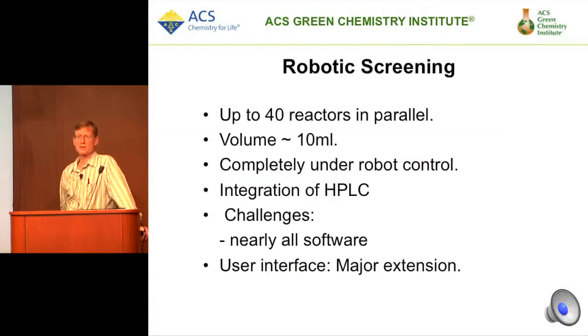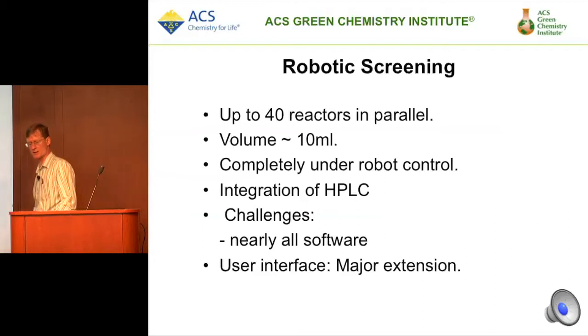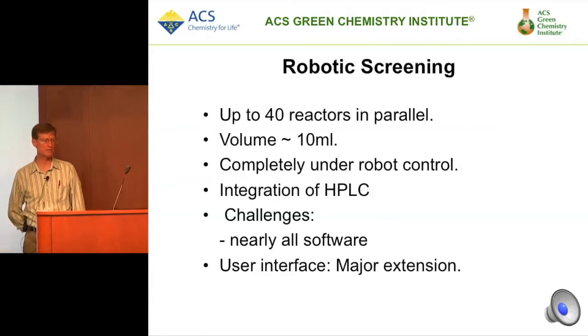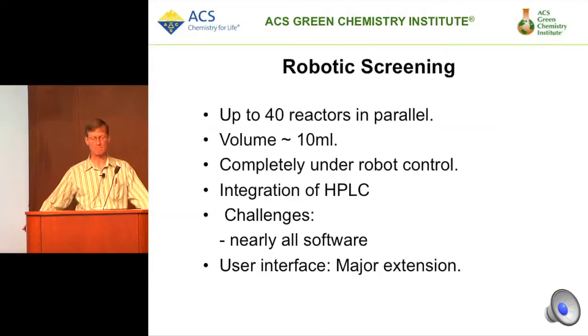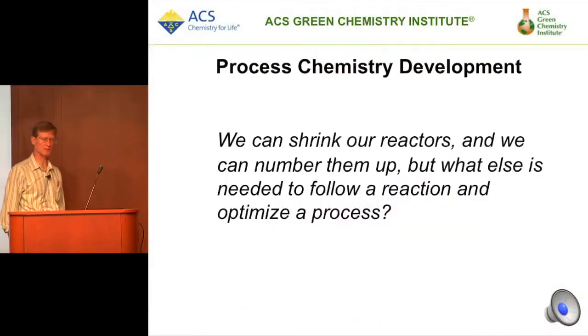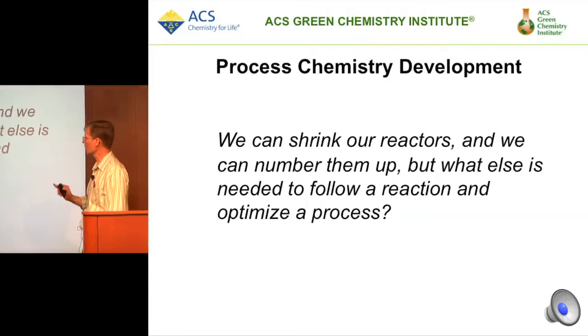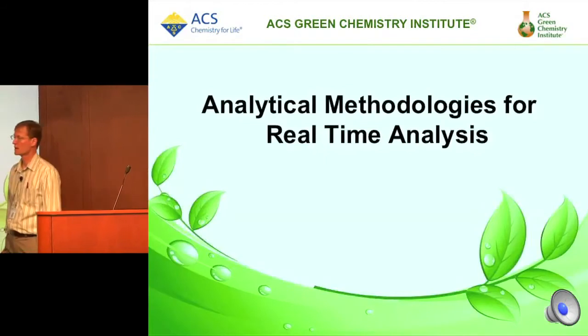Robotic screening is mostly a medicinal chemistry or agrochemical development tool, also used in solid-state chemistry to develop ceramics and high-throughput screening. It's fairly expensive but highly automated. You set reactions up and they run off to create your analogs on the order of millions of compounds a year. In process chemistry, we can shrink our reactors and number them up — but what else do we need to optimize the process?